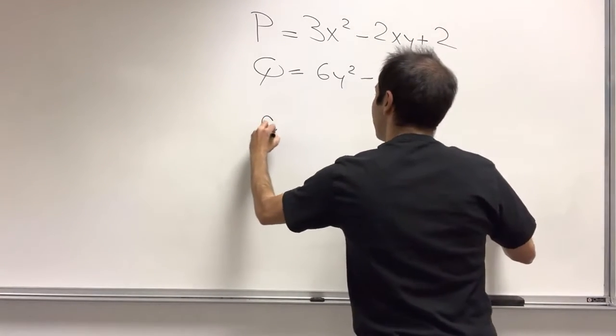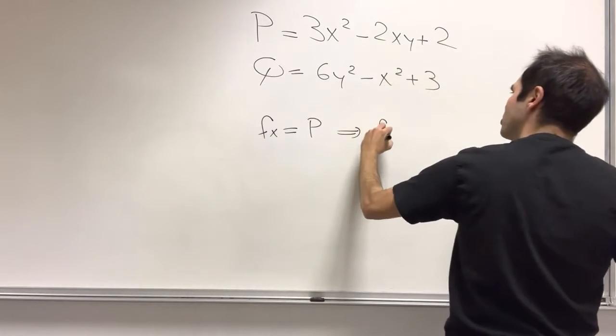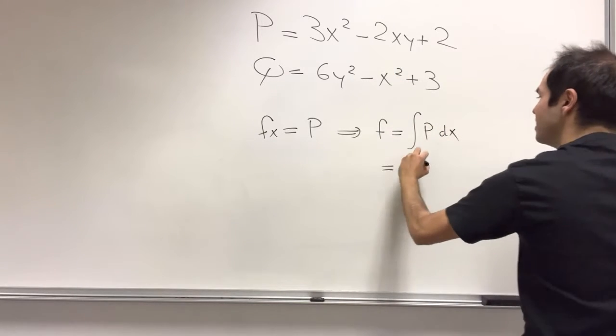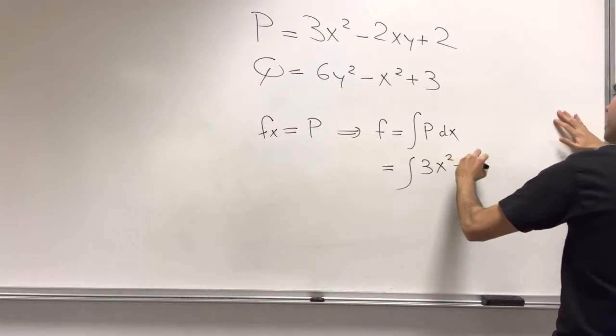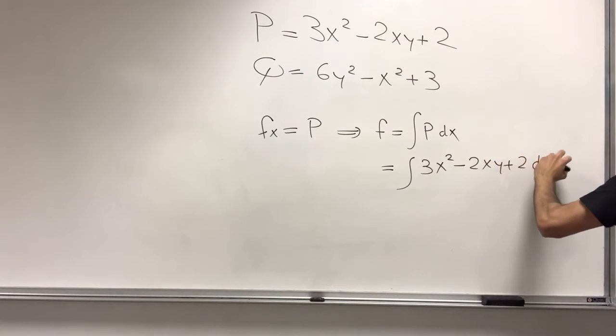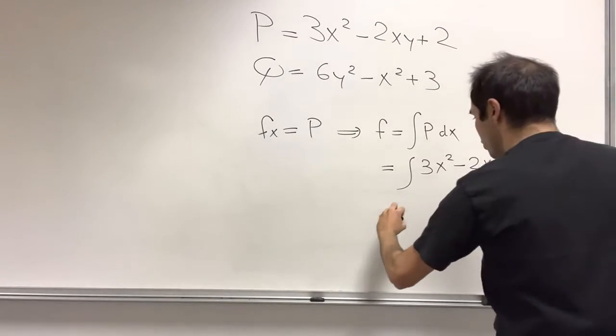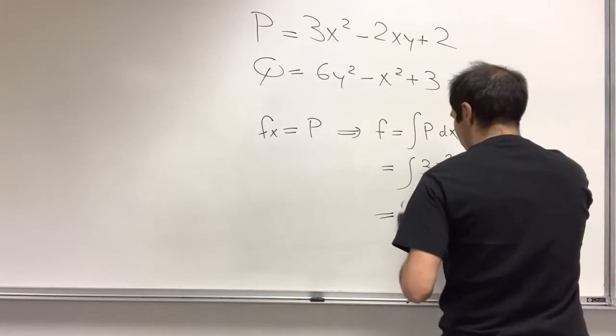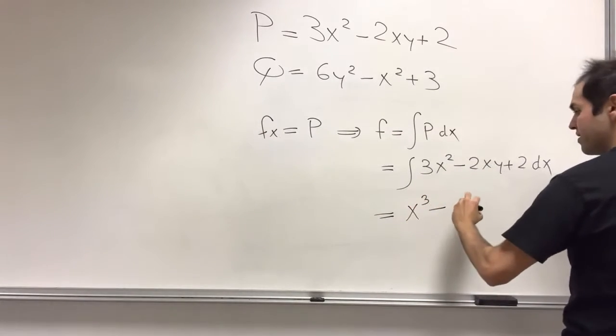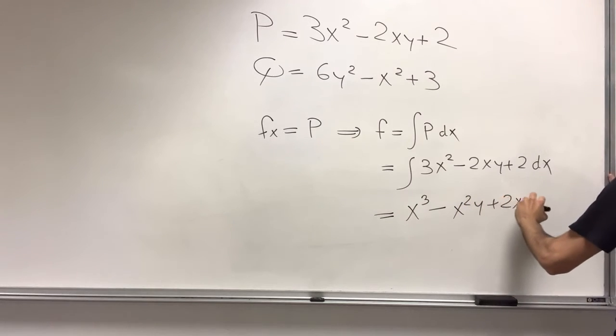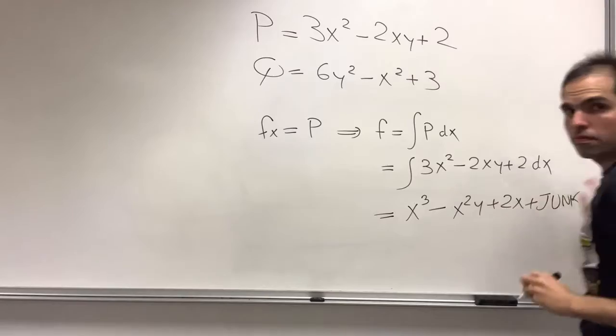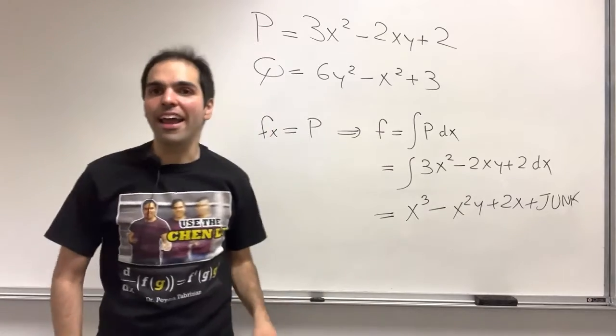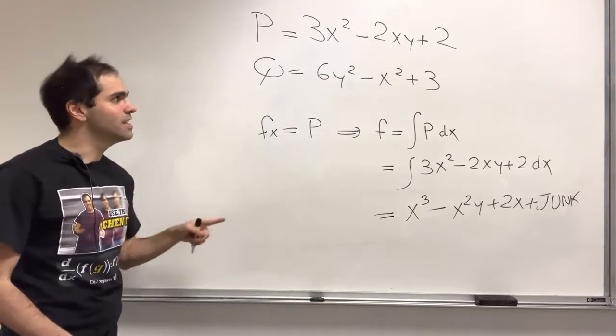So what we get is f_x is P. So in other words, to get f, you integrate P with respect to x. So here, it becomes integral of 3x squared minus 2xy plus 2 dx, which then gives you x cubed minus x squared y plus 2x plus some junk. Technically, the junk is a function of y, but here we just call it junk. It's a bit easier.